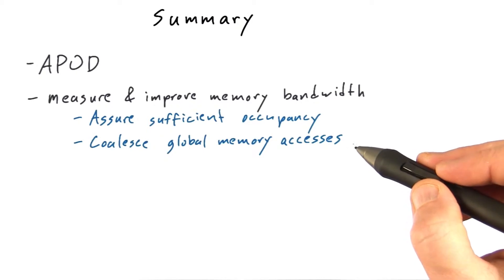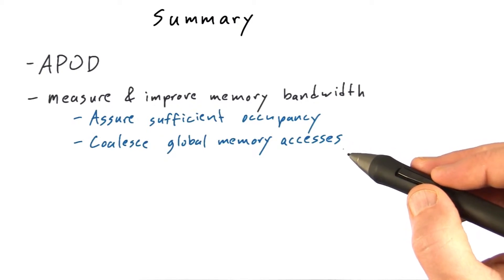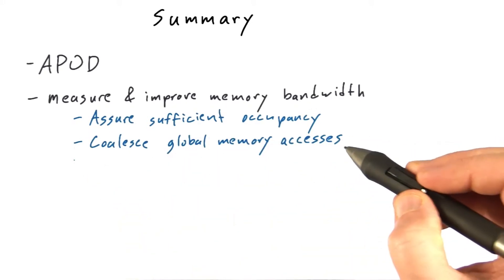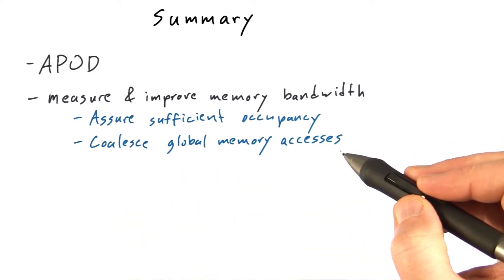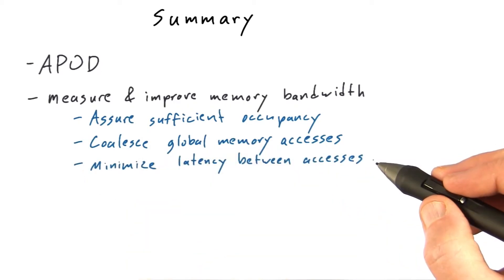Coalesce global memory accesses. Really strive to see if you can find a way to cast your algorithms that you achieve perfect coalescing. And if you can't, consider whether you can do a transpose operation or something that will get poor coalescing once, but then put the data into a memory form where all your subsequent accesses will get good coalescing. Remember Little's law. In order to achieve the maximum bandwidth, you may need to reduce the latency between your memory accesses.